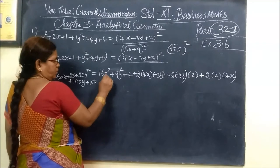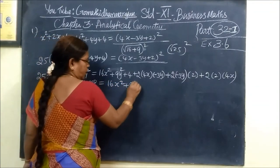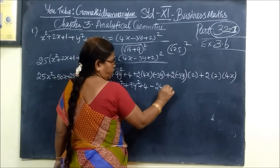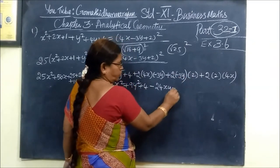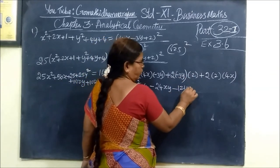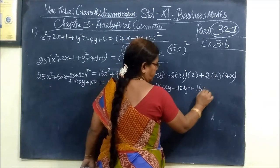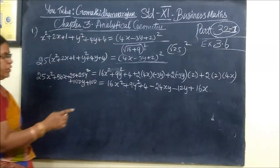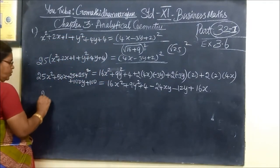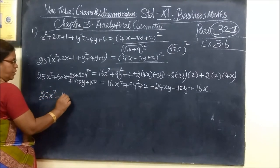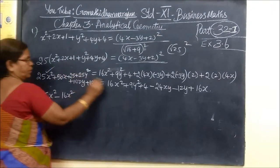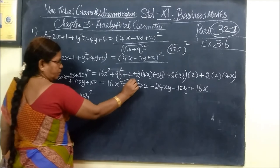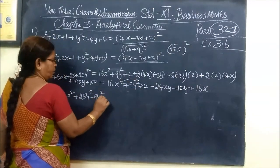So expanding: the left side gives 25x squared plus 25y squared plus 50x plus 100y plus 4, and the right side expansion gives terms including minus 9y squared, minus 24xy. So 25x squared minus 60xy plus 25y squared, combining like terms step by step.